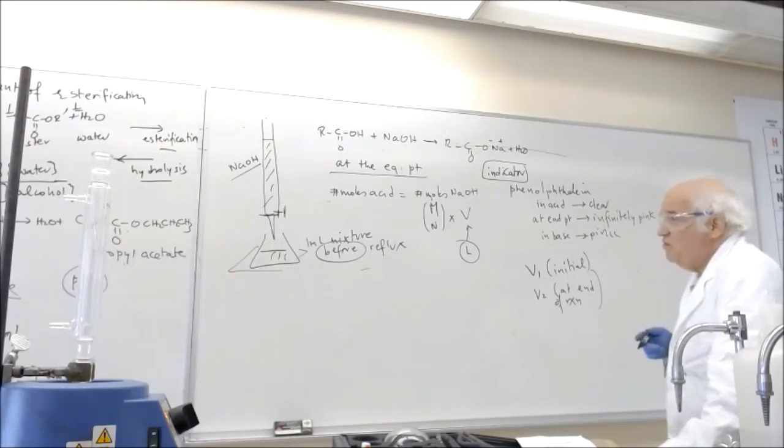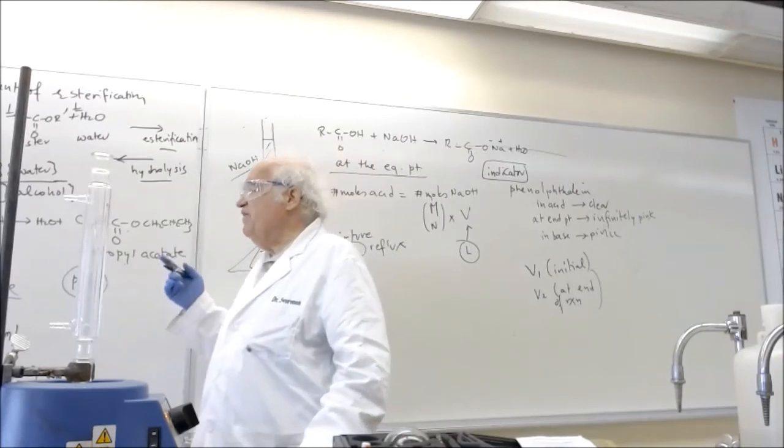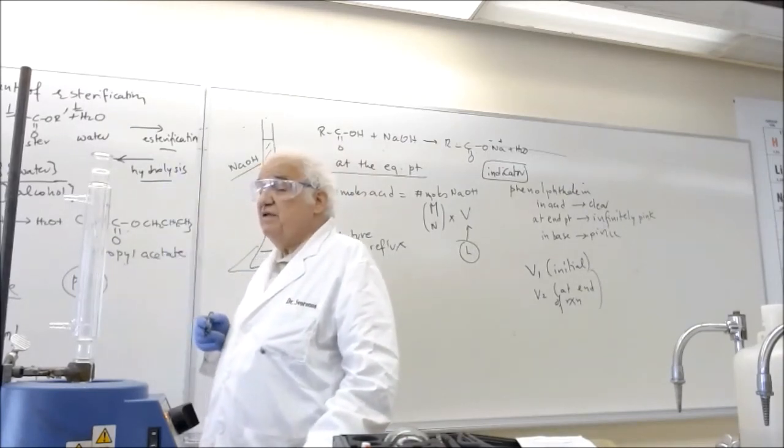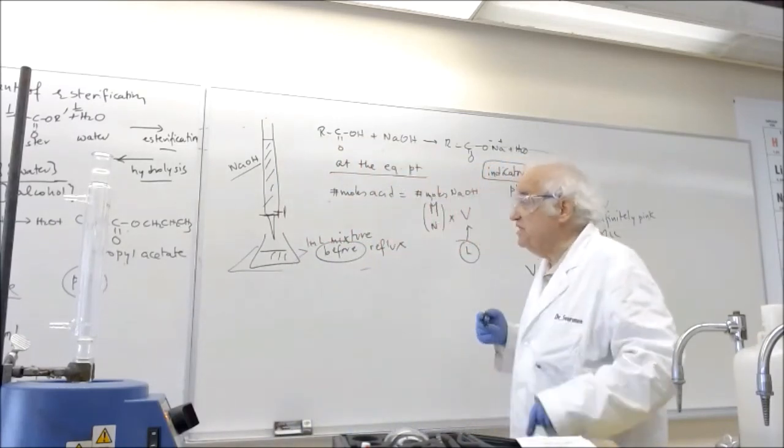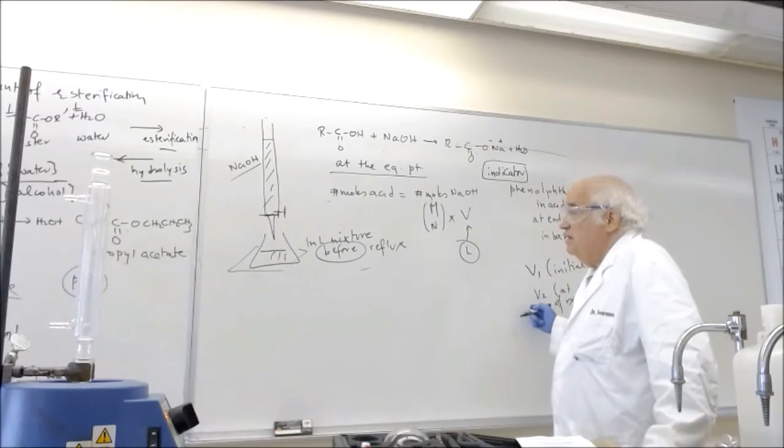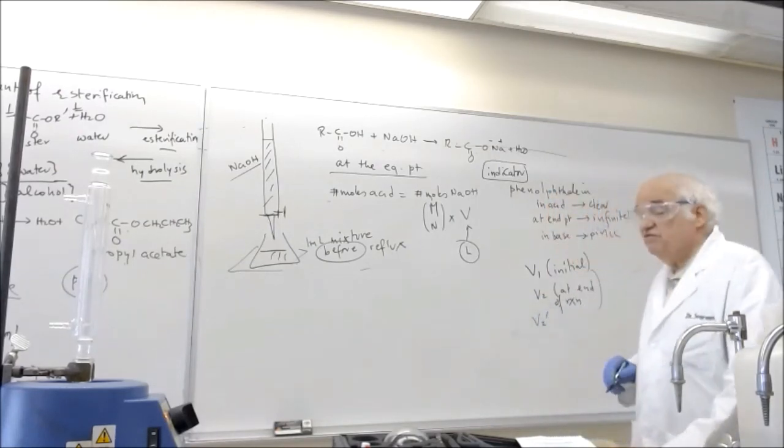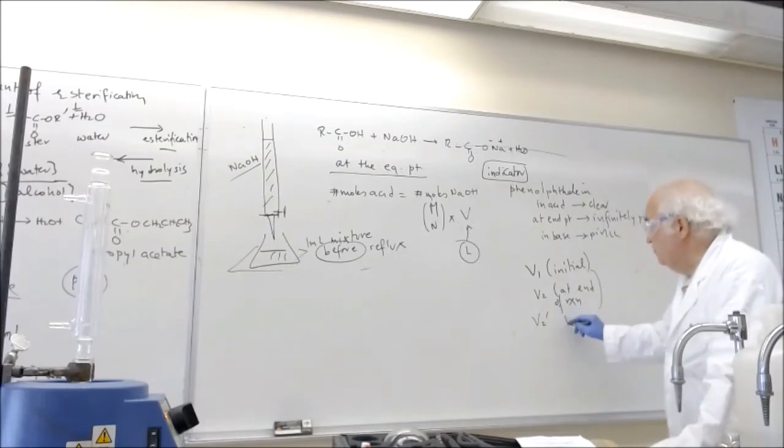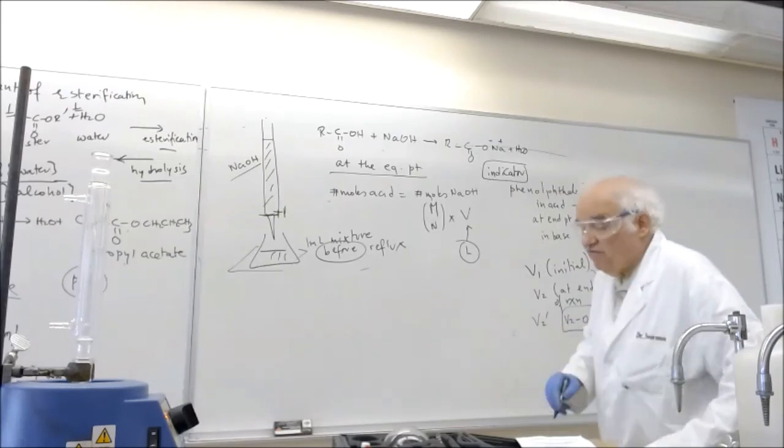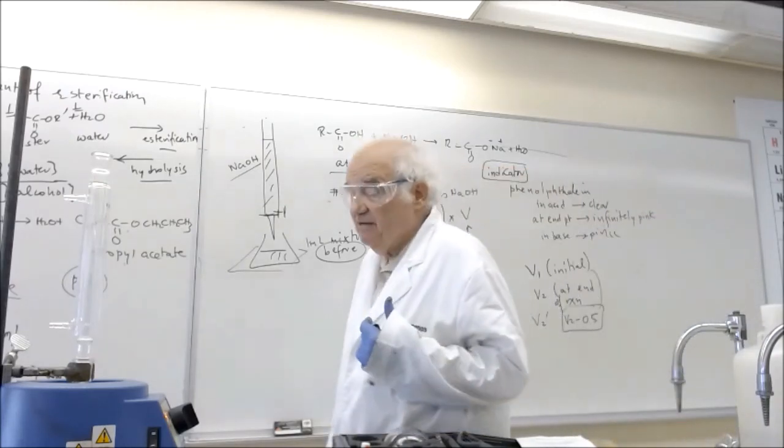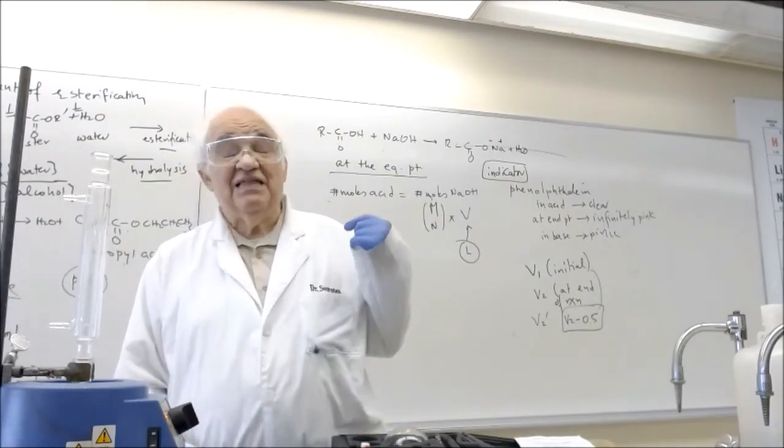However, remember now, before we perform the reaction, or the reflux, we added eight drops of sulfuric acid. And so therefore what we have to do is we have to account for that acid, because that acid in the second titration will also be neutralized by the base. So therefore what we do then, instead, we use V2 prime, which is V2 minus 0.5, which is the average amount of acid that we have done over the years, that of sulfuric acid is present in the one milliliter at the end of the reflux.